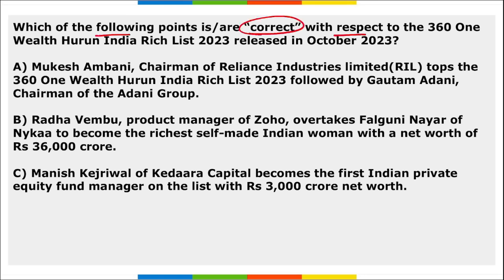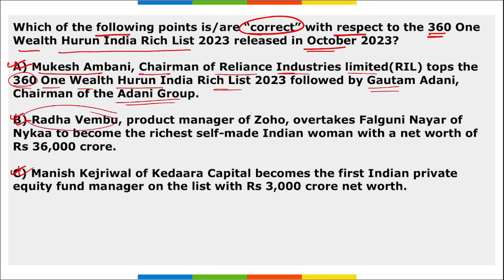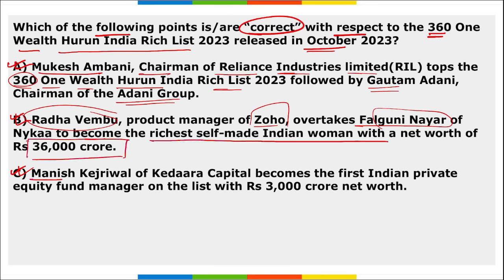Regarding 360 One Wealth Hurun India Rich List 2023: all three options are rightly mentioned. Mukesh Ambani topped the list, followed by Gautam Adani. Radha Vembu, product manager of Zoho, overtook Falguni Nayar to become the richest self-made Indian woman with ₹36,000 crore net worth. Manish Kejriwal of Kedaara Capital became the first Indian private equity fund manager on the list with ₹3,000 crore net worth.